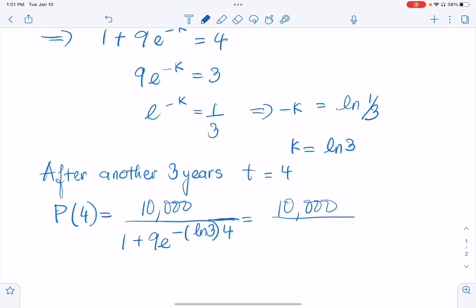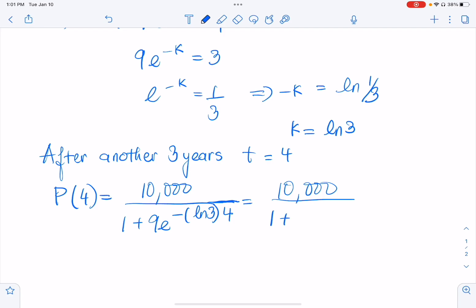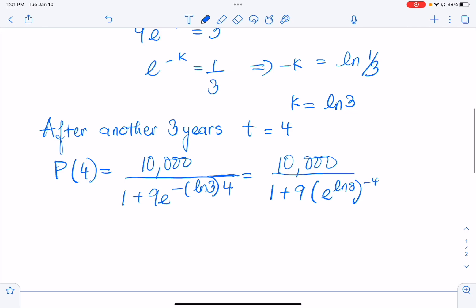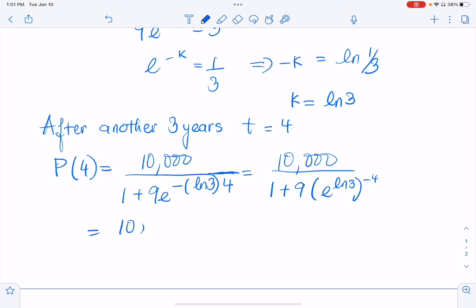Now we just have to simplify. 1 plus 9e, I can rearrange the numbers. So we can get e to the ln 3 to the negative 4. So we can cancel out e and ln, ending up with 10,000 over 1 plus 9 times 3 to the negative 4. And then you can use a calculator for it, but I'm just going to go ahead and simplify before I use a calculator.